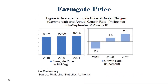The average farm gate price of broiler chicken in commercial farms for July to September 2021 was quoted at 92.65 pesos per kilogram live weight. This was higher by 2.9% from the previous year's same period, July to September, at an average of 90 pesos per kilogram live weight.